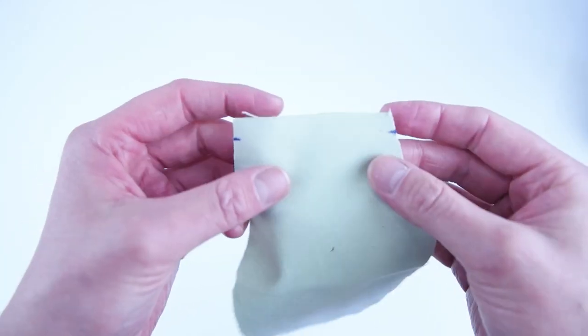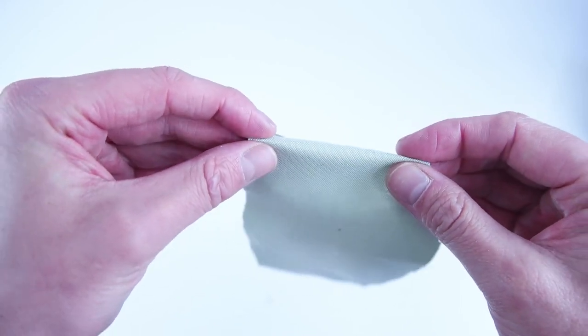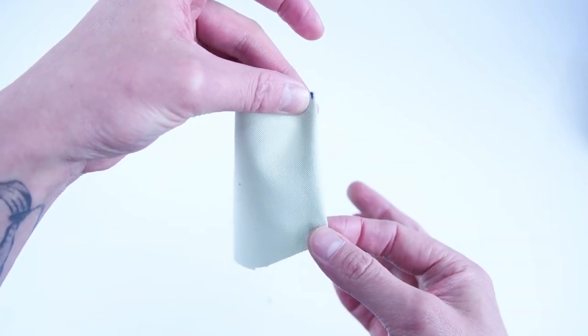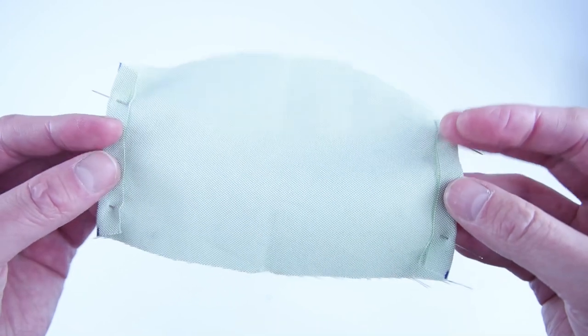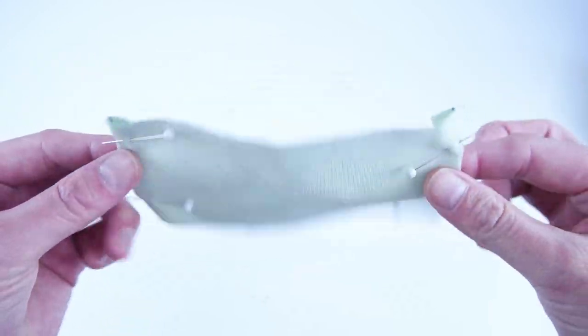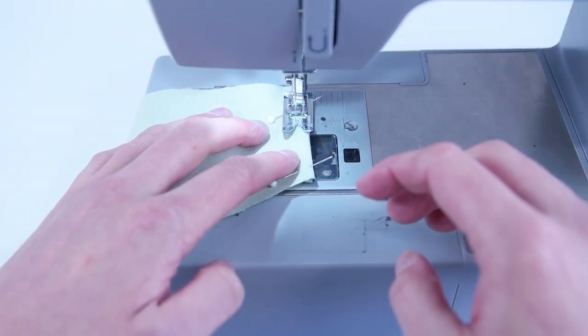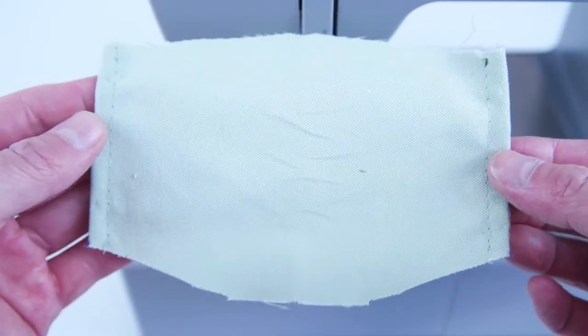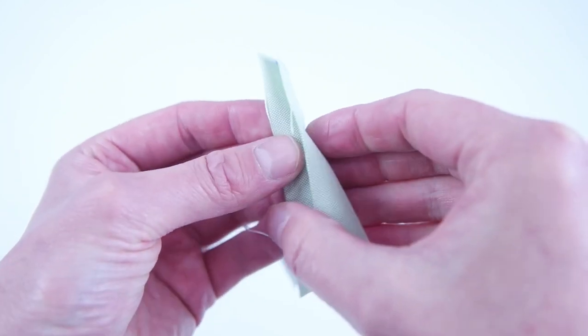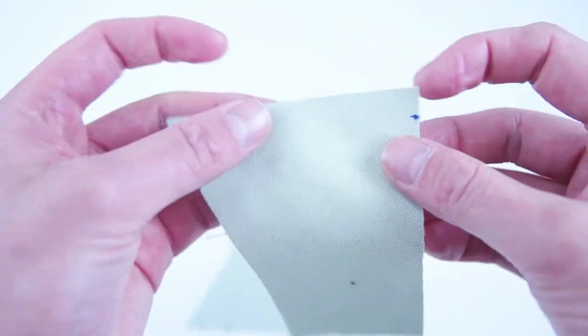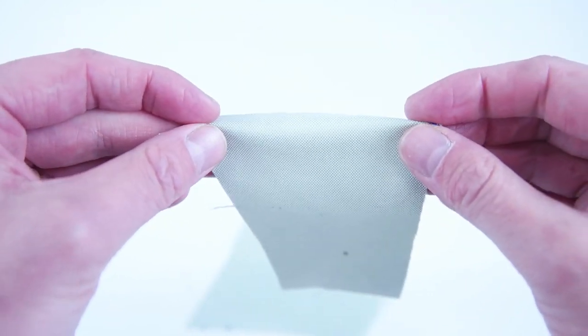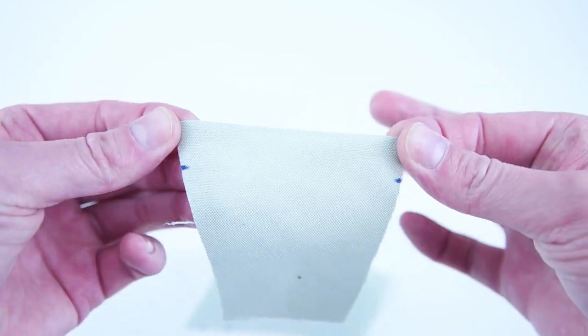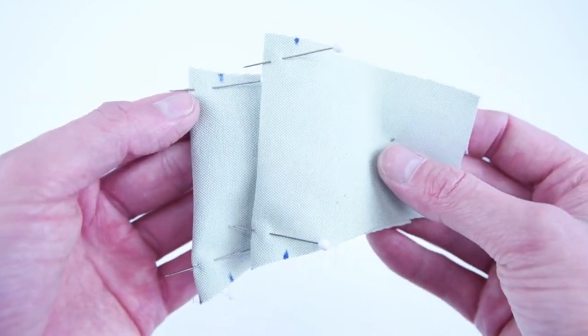Moving on to construction, grab your center lining panel. We're going to hem the edges by rolling the side over, pinning it down, and stitch along that edge. And we're going to be stitching as close as we can to the outside edge. Grab your lining side panels and we're going to do the same thing. Roll over the edges as indicated on the pattern, pin the hem down, and stitch as close as you can to the outside edge.